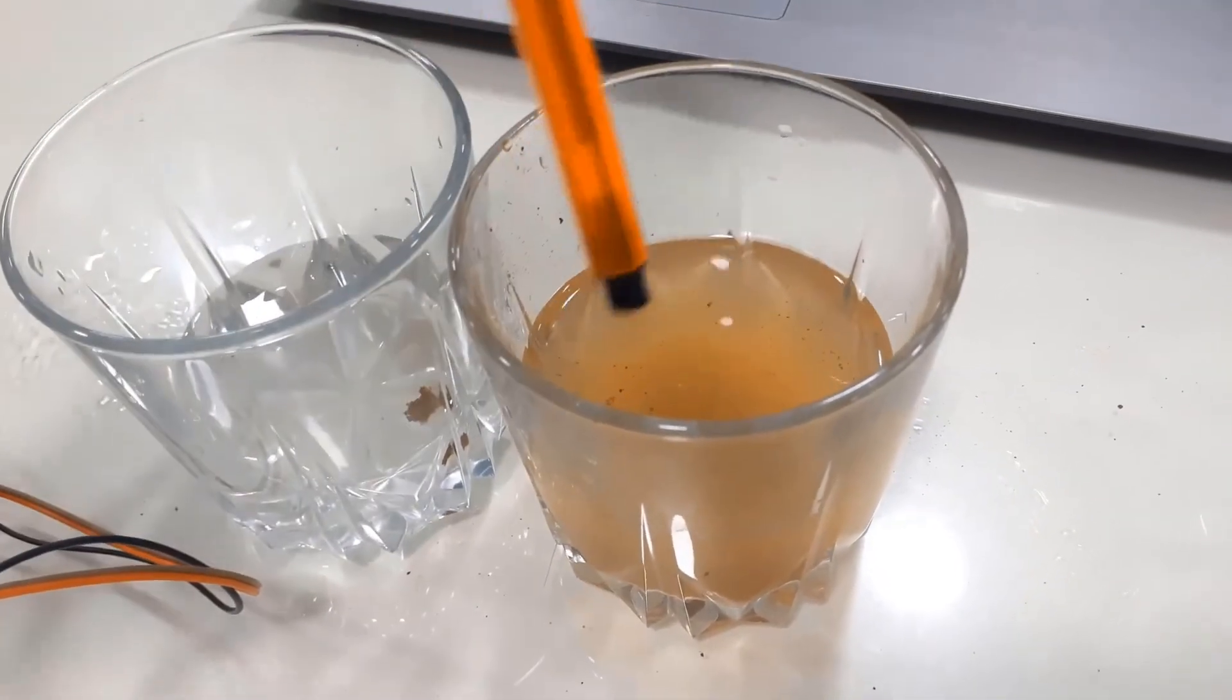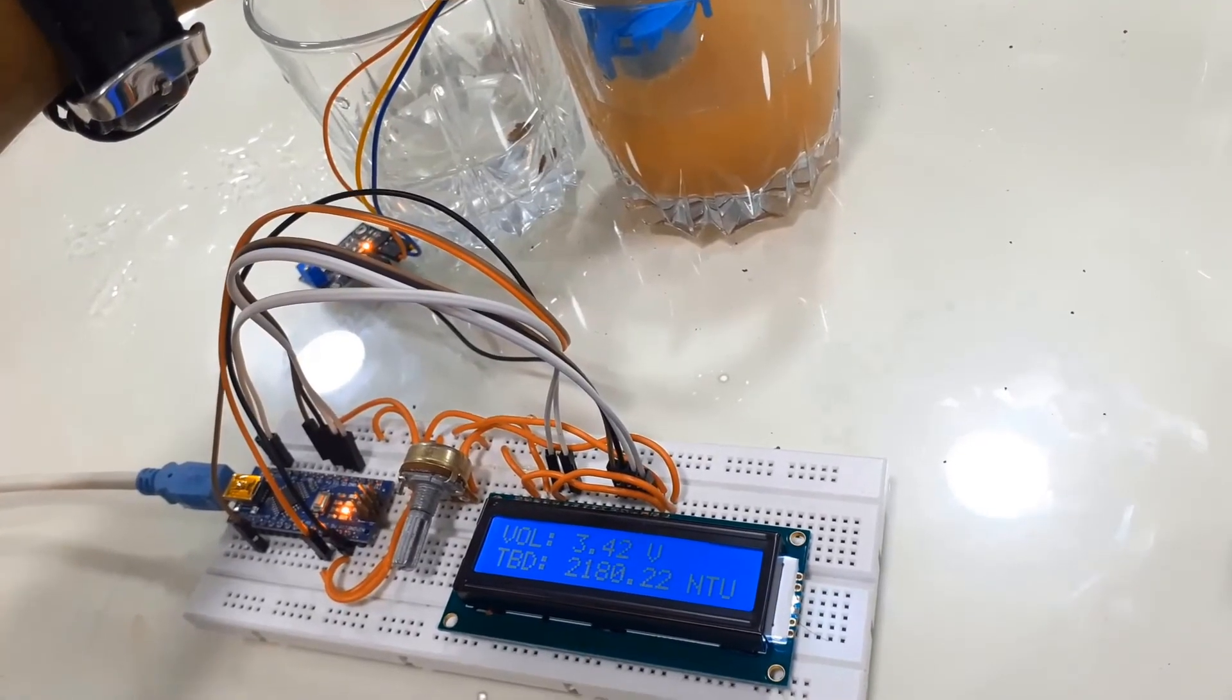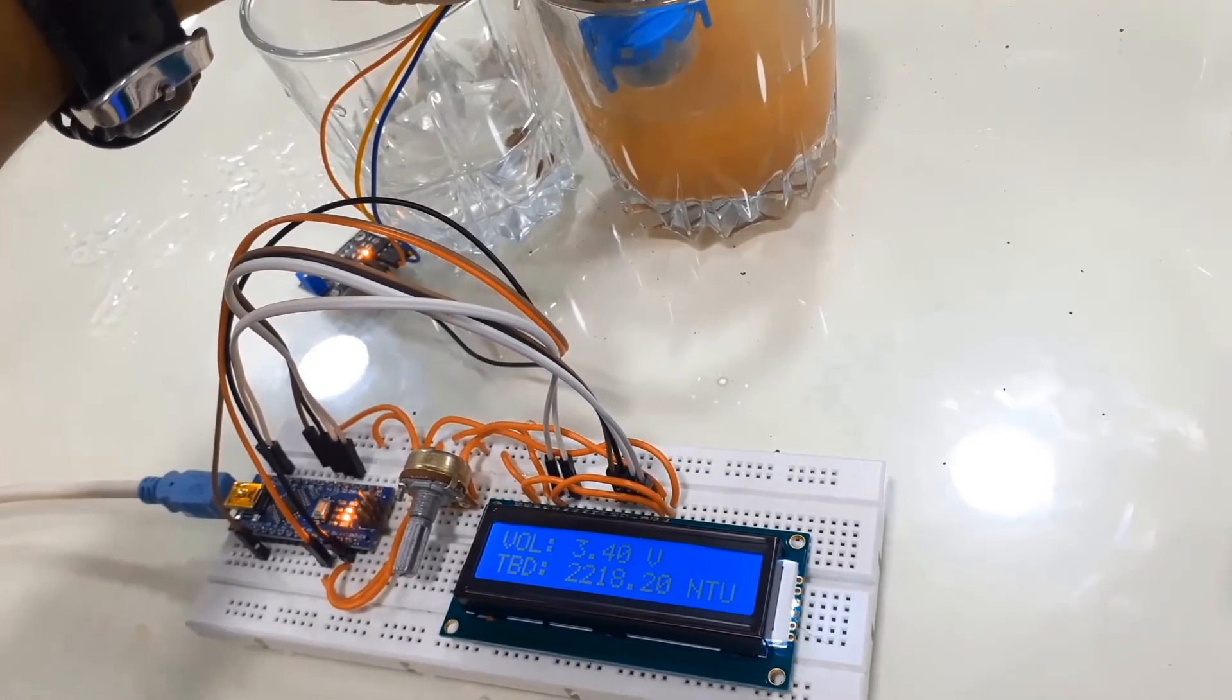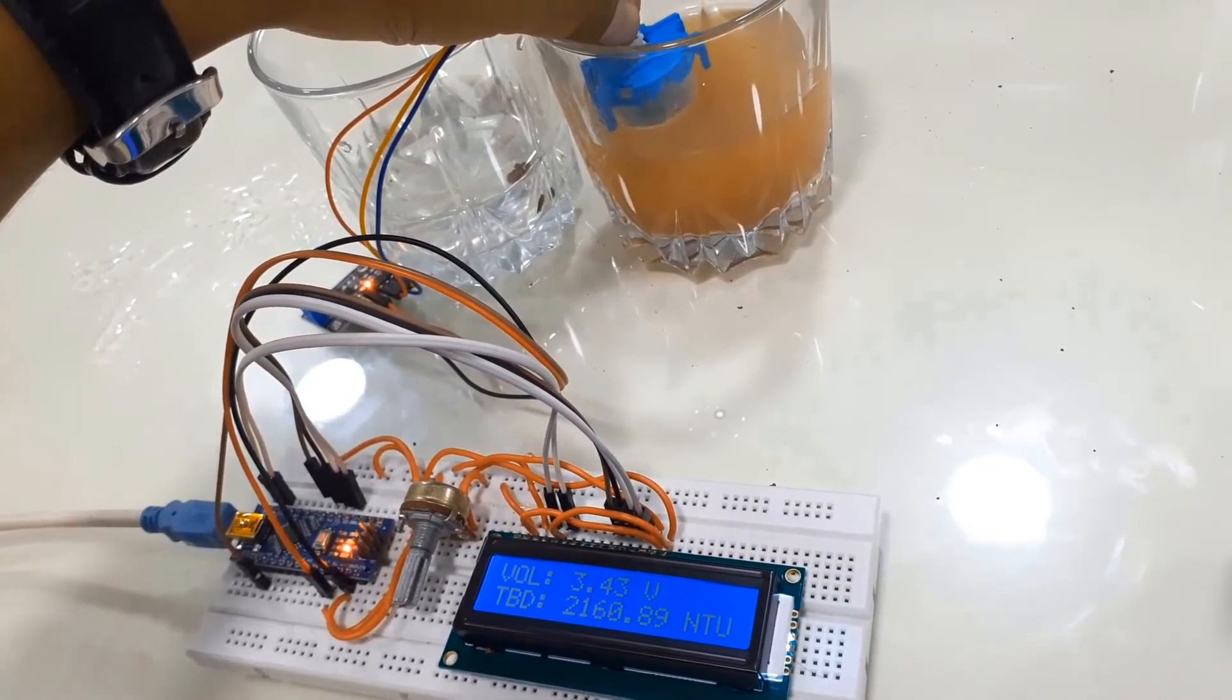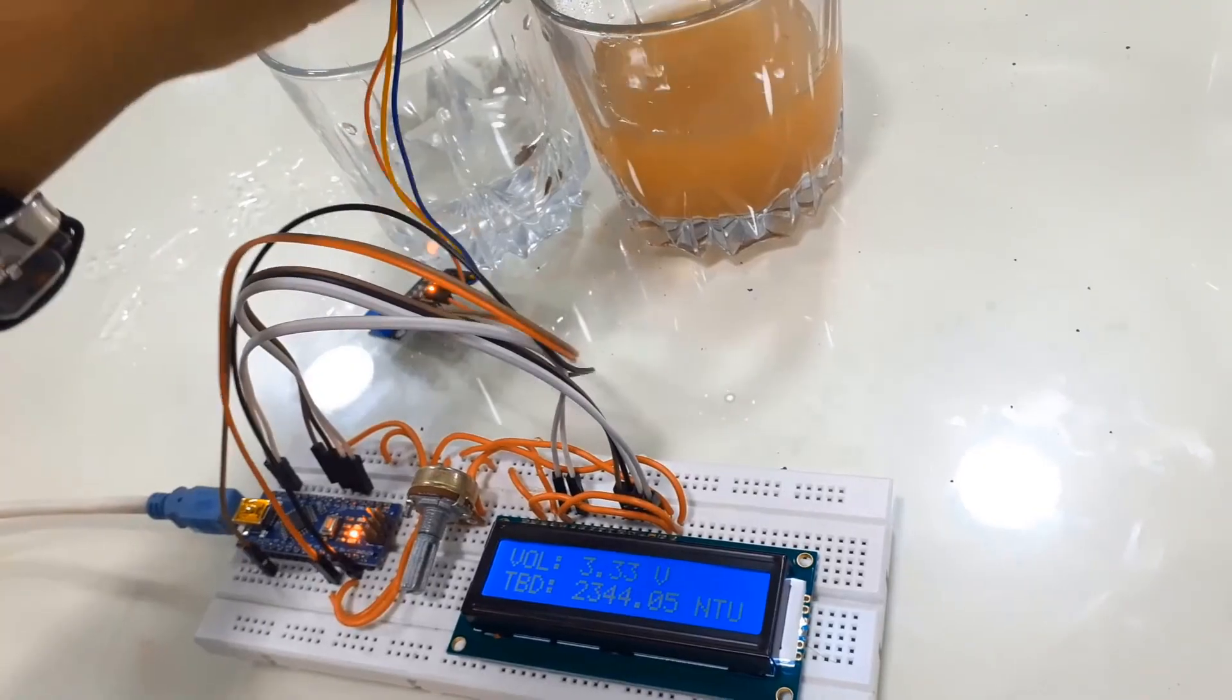After adding, I am stirring it so that the mud gets dissolved. Now, let's just measure the turbidity. So, now it has gone more than 3000 NTU. So, this is how the turbidity sensor helps to measure the turbidity of any liquid.